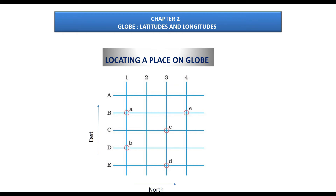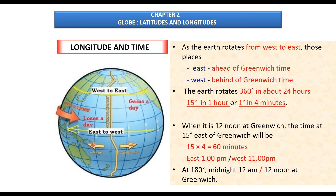To understand how to locate a place, draw equidistant horizontal and vertical lines on paper. Label the vertical lines 1, 2, 3, 4 and the horizontal lines A, B, C, D, E. Draw random circles where the lines intersect and name them. Treat the horizontal lines as north latitude and the vertical lines as east longitude. For example, circle A at a particular intersection can be described as B degrees north latitude and 1 degree east longitude.